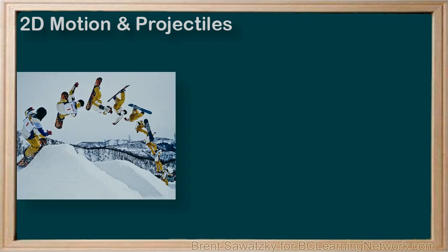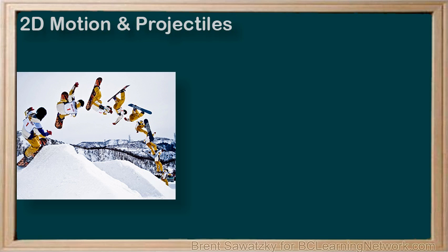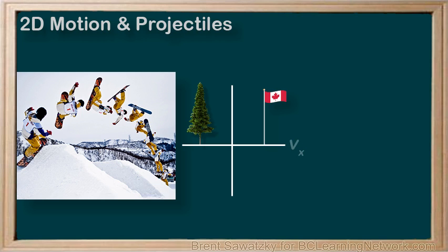Our next 2D motion situation is a very common and useful one: dealing with projectiles, objects that are flying through the air. In this case, rather than both dimensions being parallel with the surface of the Earth, one of the dimensions is vertical, standing straight up like a tree or a flagpole. Therefore, our dimensions would be horizontal along the ground, which we'd call Vx, and the vertical dimension standing straight up in the air, which would be Vy.